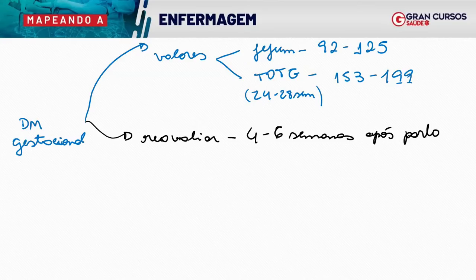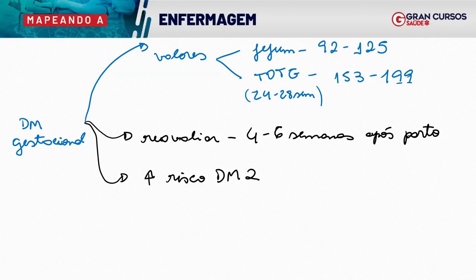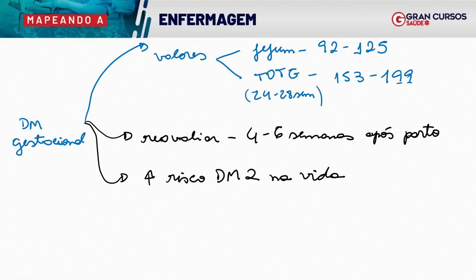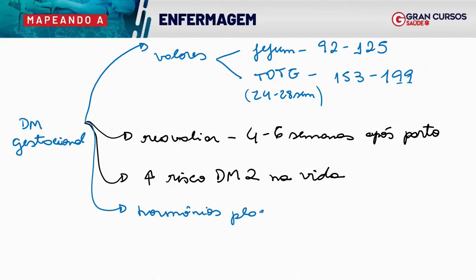A gestante com diabetes mellitus gestacional tem risco maior de diabetes mellitus tipo 2 ao longo da vida. O período de rastreamento de 24 a 28 semanas é porque nessa fase sofre influência de hormônios placentários — como lactogênio placentário, prolactina e cortisol — que estão aumentados na gravidez, potencializando o diabetes.